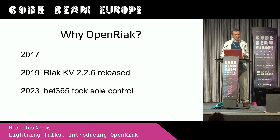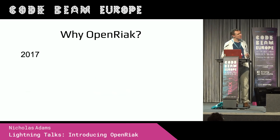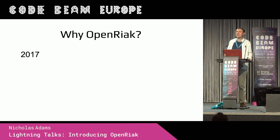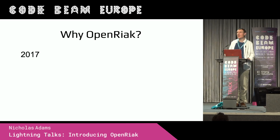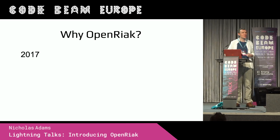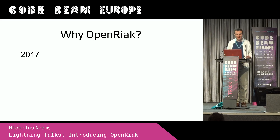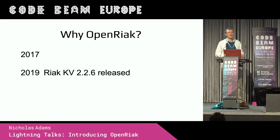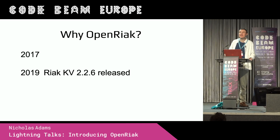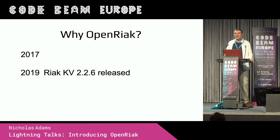Fortunately — my slides are playing up, my images aren't showing — fortunately, in 2017, Bet365, a British betting company, bought the IP rights to React and made everything open source. So everybody thought, great, an open source community project we can revive and bring back to life. In 2019, React KV2.2.6, the first open source version of the key-value store, was released, and everybody was happy — it looked like things were going forward.